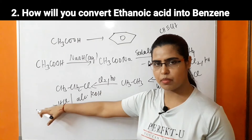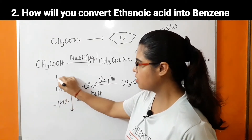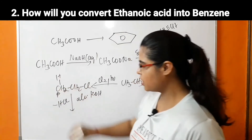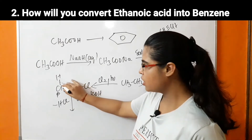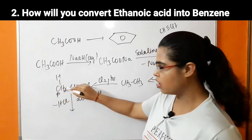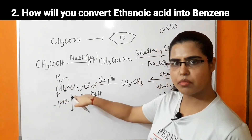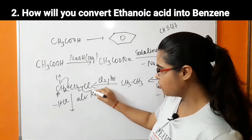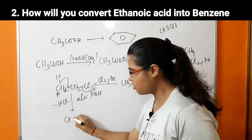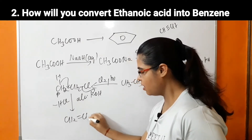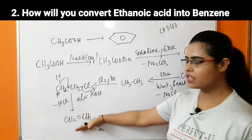In this case we use alcoholic KOH. By the help of alcoholic KOH, dehydrohalogenation takes place — the hydrogen of the beta carbon and the halogen of the alpha carbon are removed. The carbon-carbon bond shifts and a carbon-carbon double bond is formed, with chlorine removed to form a salt. So there will be formation of ethene.